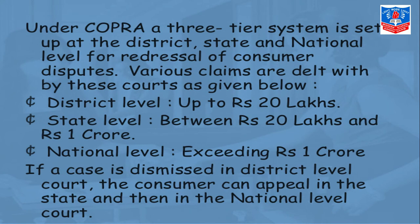Under COPRA, a three-tier system is set up at the district, state, and national level for redressal of consumer disputes. District level handles claims up to 20 lakh rupees. If the loss is between 20 lakhs and 1 crore, the complaint goes to the state level. If the loss is more than 1 crore rupees, the complaint goes to the national level.